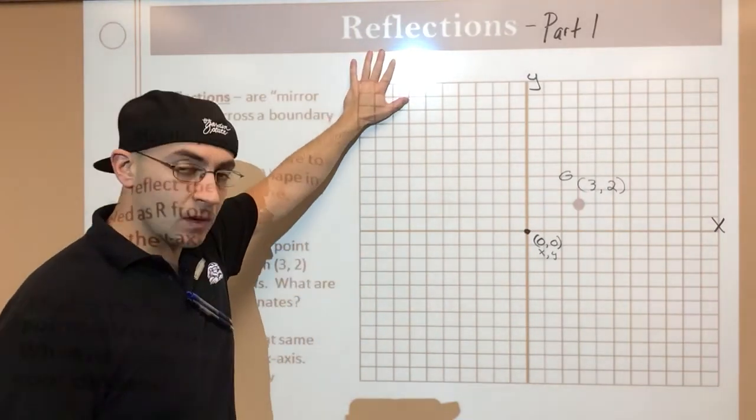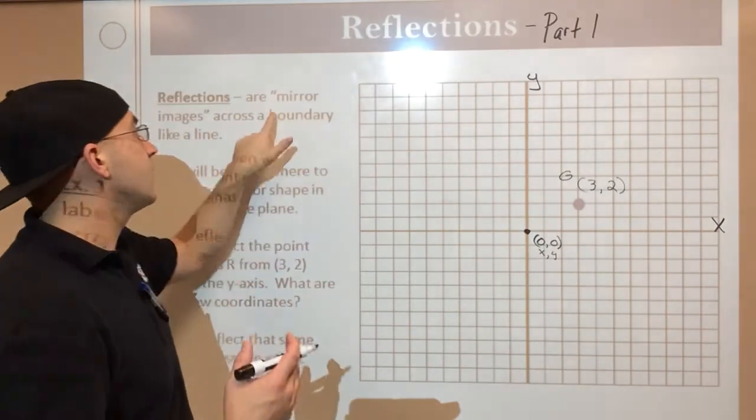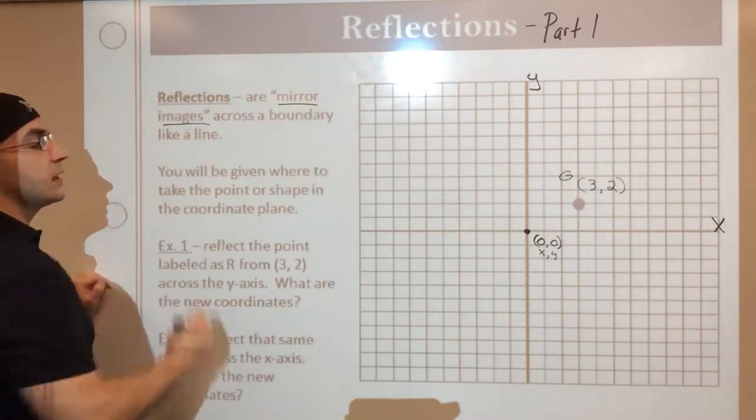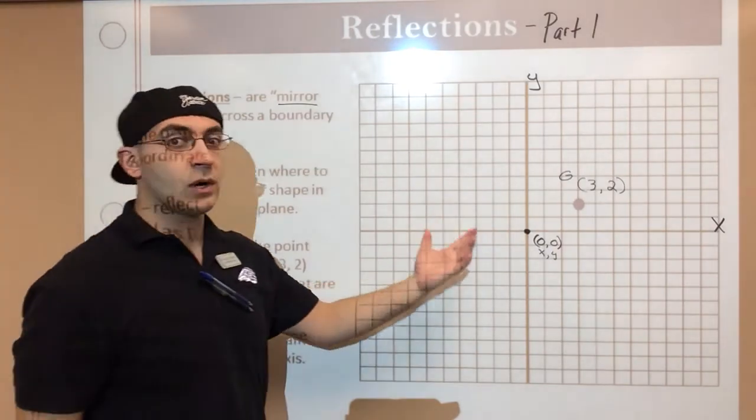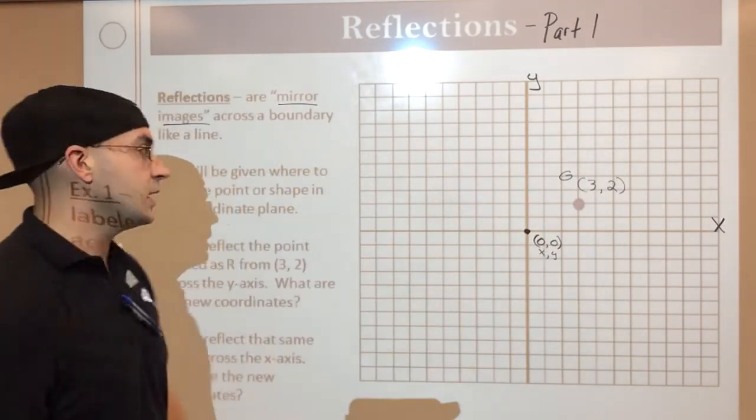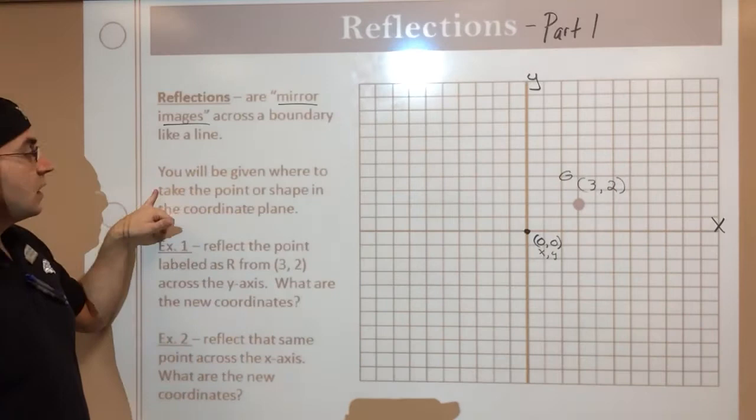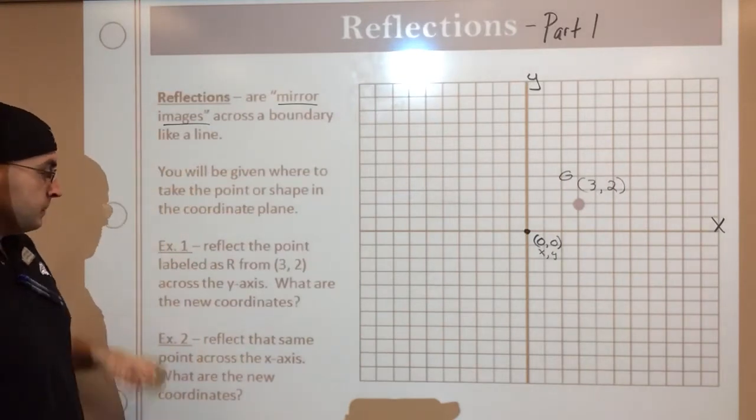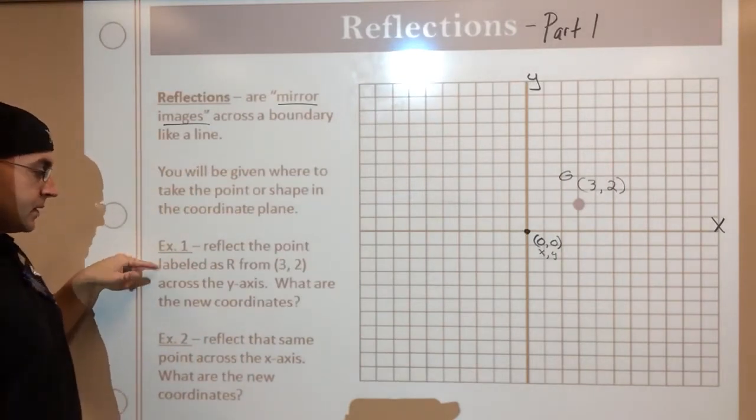So on this one, reflections, this is more of a mirror image. Tell me what line you want me to reflect across, and then I can give you what you need. So for instance, I'm going to give you a point. Let's just use point G. Example 1 says label it as R.